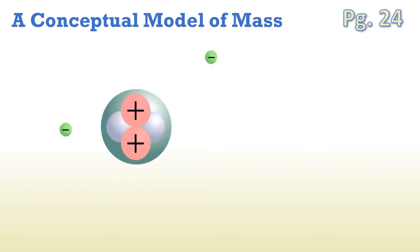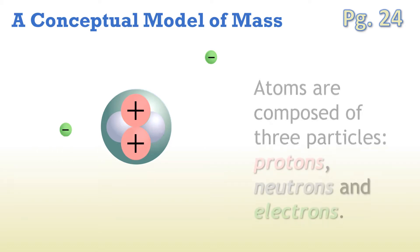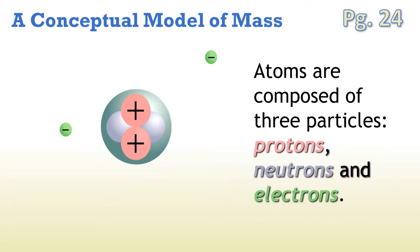Here we're going to introduce a conceptual model of matter, of mass, which is found on page 24 of your textbook. In this model, atoms are said to be composed of three particles: protons, neutrons, and electrons. Here the protons are represented as being relatively large and colored pink with a plus sign. The neutrons are a neutral, dull blue color, and electrons are bright green with a negative charge.